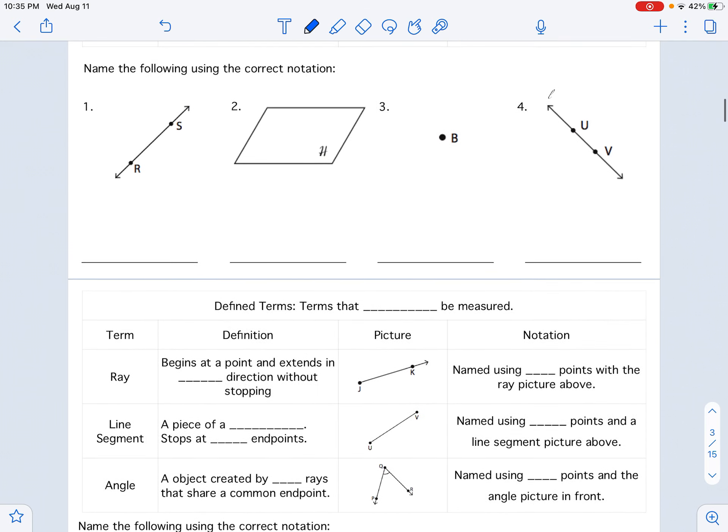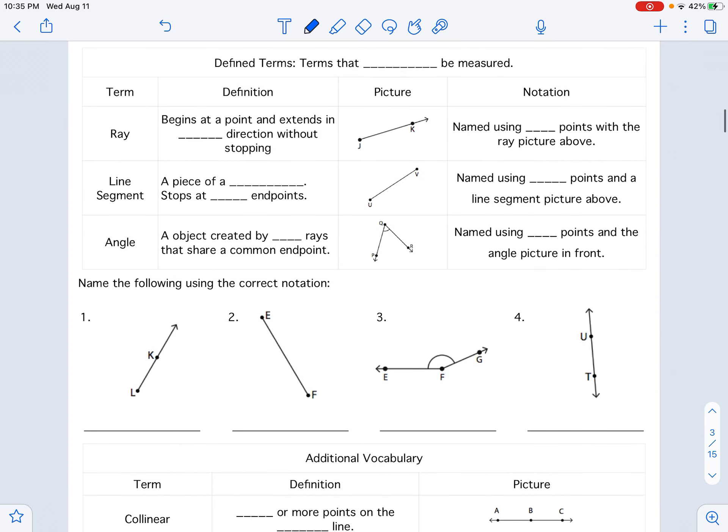Defined terms, like I said, we're going to skip those parts and we're just going to do vocabulary today. And we'll come back and do the other parts tomorrow. Defined terms are things that can be measured. Like I can say that that line segment is six feet long or something like that. We have three of those.